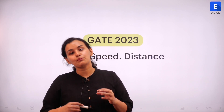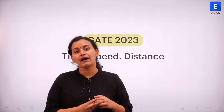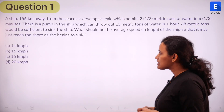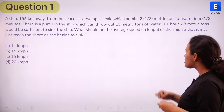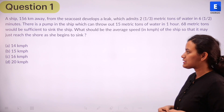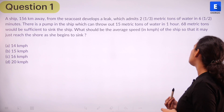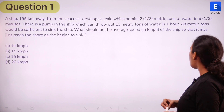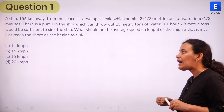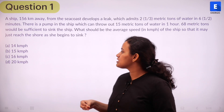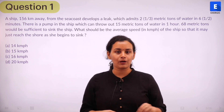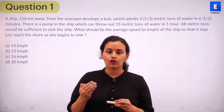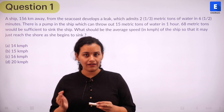Time, speed, and distance is undoubtedly one of the most important topics of quantitative aptitude, which has been asked by GATE frequently over the last few years. The question: a ship 156 kilometers away from the sea coast develops a leak which admits 2⅓ metric tons of water in six and a half minutes. There is a pump in the ship which can throw out 15 metric tons of water in one hour. 68 metric tons would be sufficient to sink the ship. What should be the average speed in kilometers per hour so that it may just reach the shore as it begins to sink? The options are 14, 15, 16, and 20 kilometers per hour. Pause the video, read the question, and give it a good try before playing the solution.